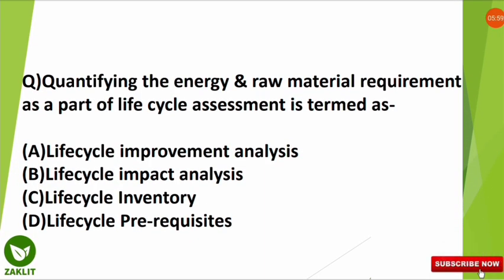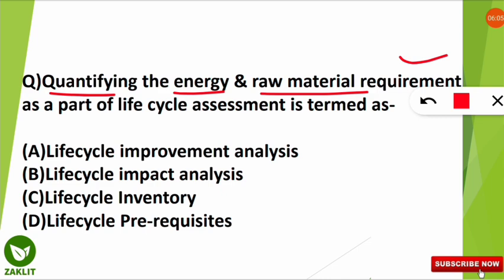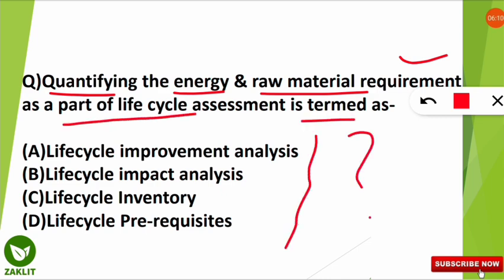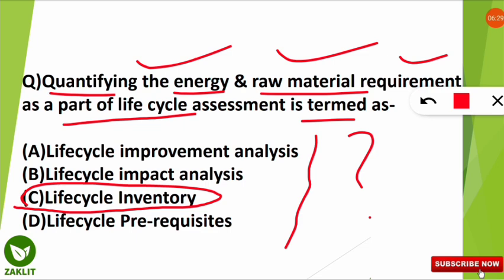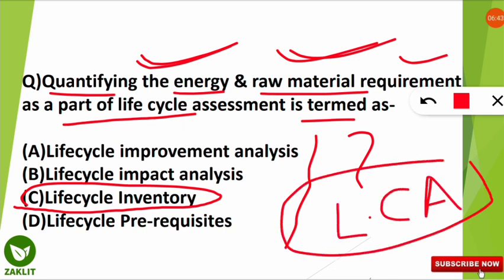The next question is from LCA — Life Cycle Assessment: quantifying the energy and raw material requirement as a part of life cycle assessment is termed as what? The correct option is option C — Life Cycle Inventory. Life Cycle Inventory is the step in which we quantify the energy and raw materials required for any project as part of LCA.